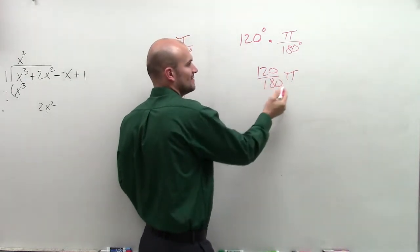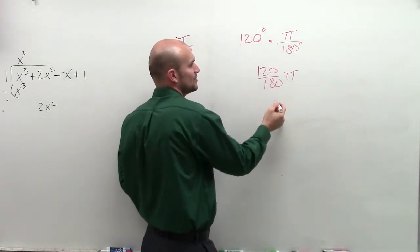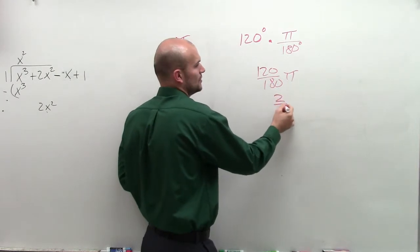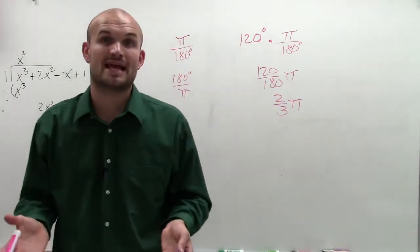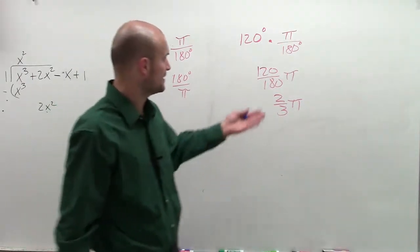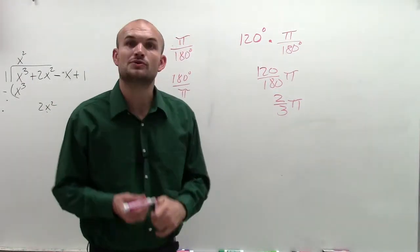So 120 divided by 180 is going to be, I can reduce that down to 2/3 pi. So what I can say is the measurement of the angle 120 degrees is equivalent to the measurement in radians of 2/3 pi.